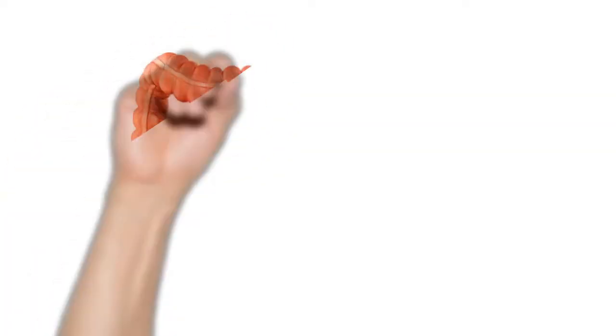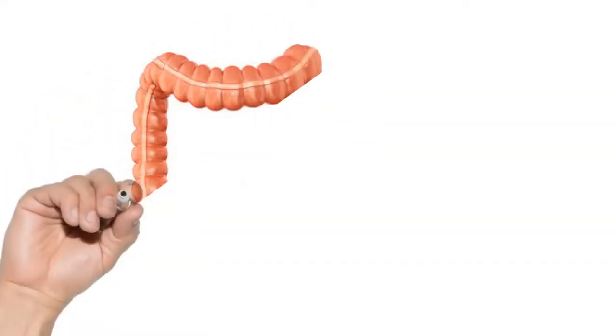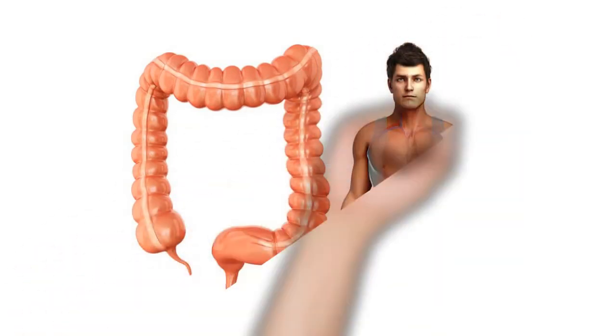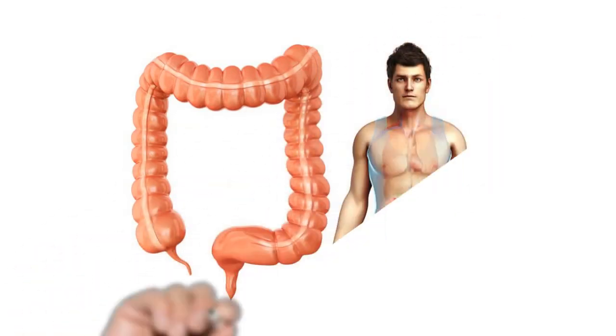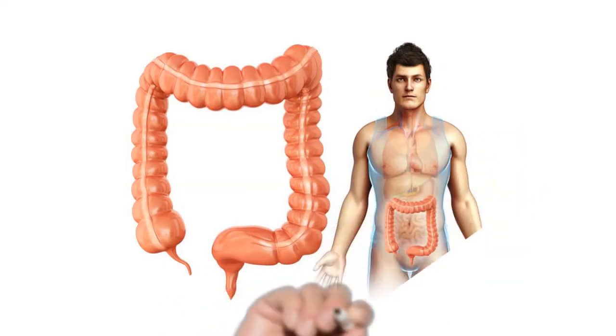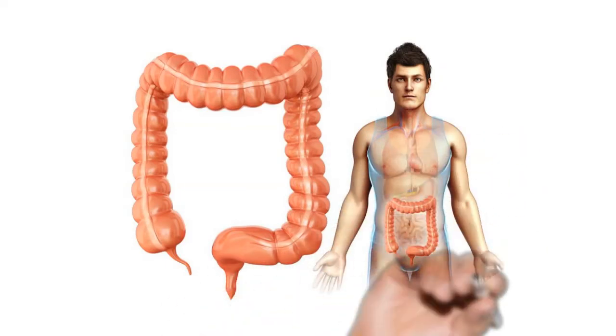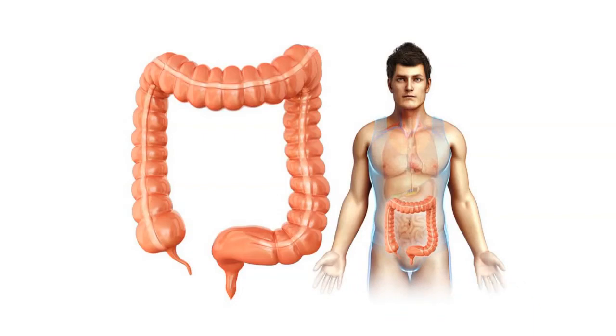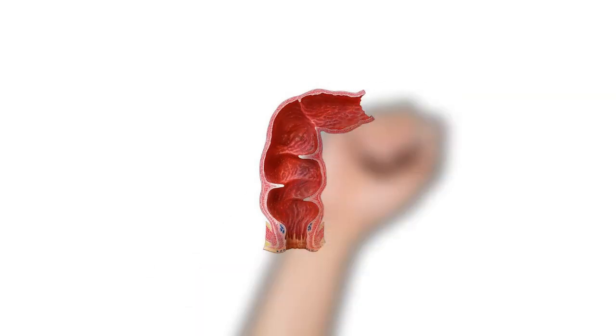Chyme not absorbed in the small intestine enters the large intestine. As it passes through the cecum and ascending, transverse, descending, and sigmoid colon, water and salts are absorbed and chyme is converted into feces. The rectum stores feces until nervous stimulation initiates the defecation reflex, resulting in elimination through the anal canal.